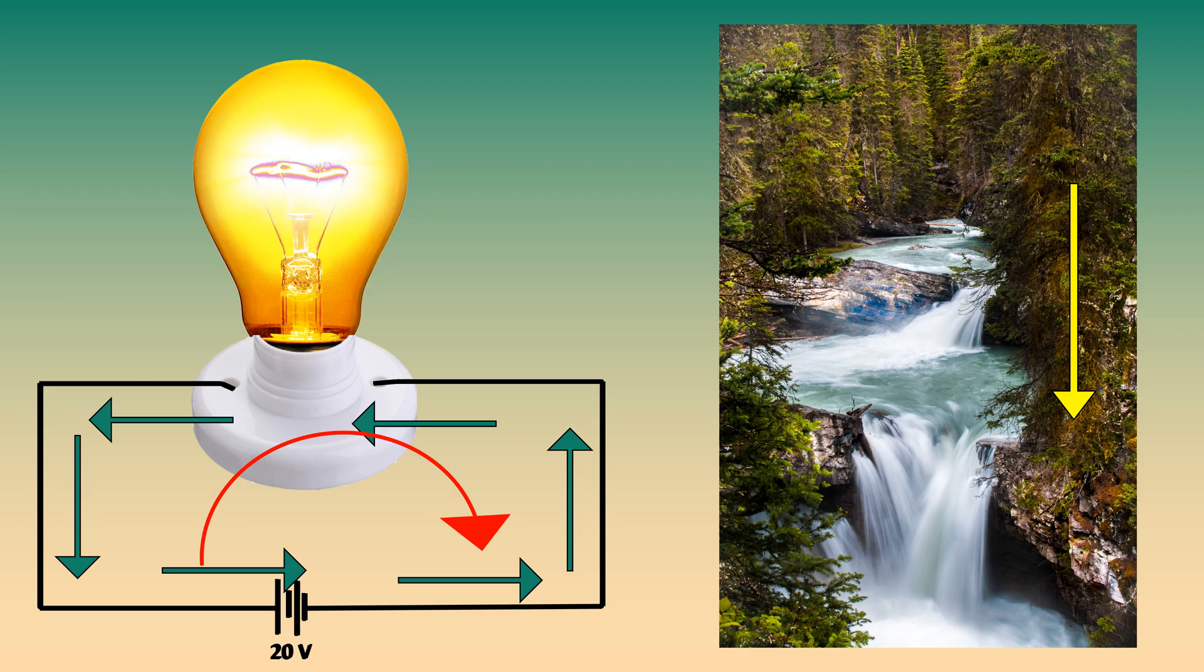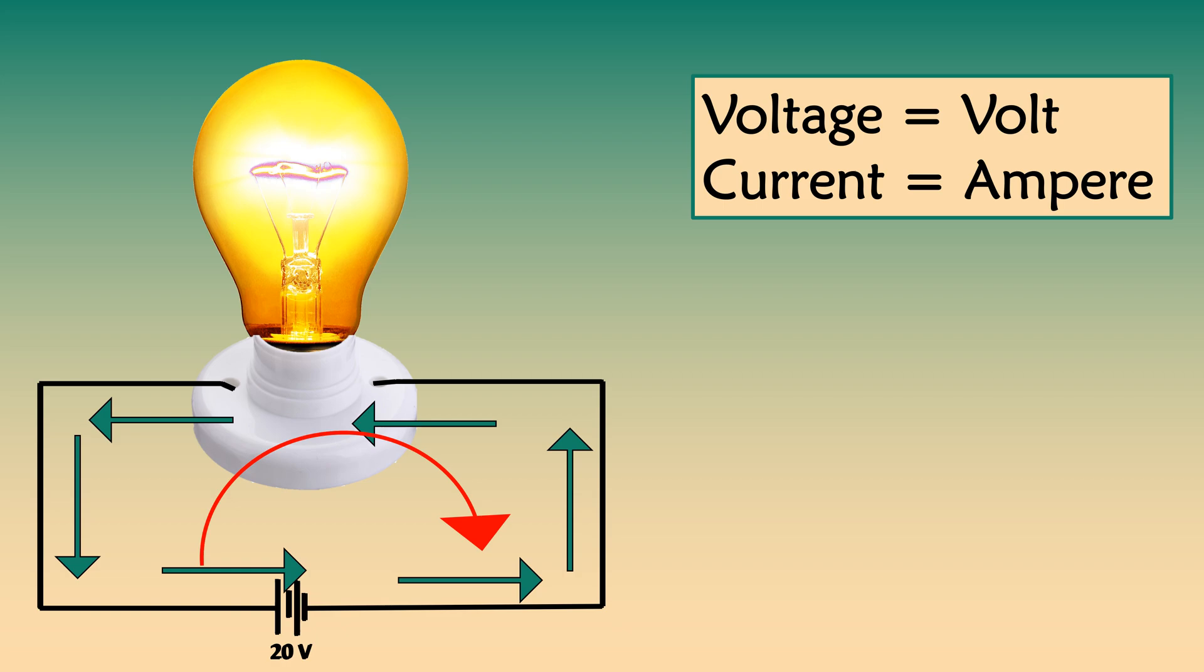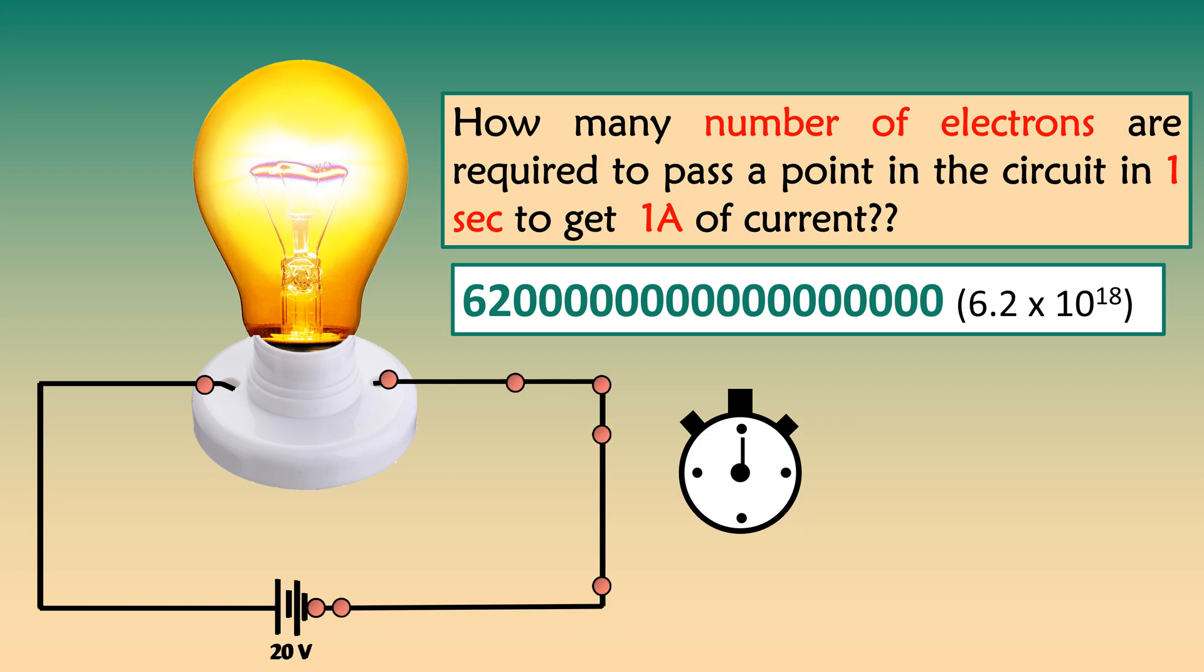The unit of electric potential or voltage is volt. The unit of electric current is ampere. Do you know how many electrons are required to pass a point in a circuit in one second to get one amp current? We need 6.2 into 10 power 18 electrons.